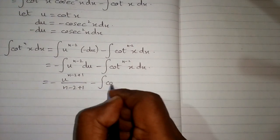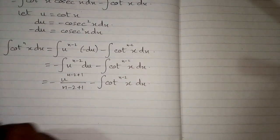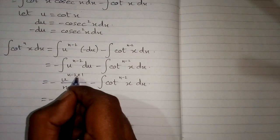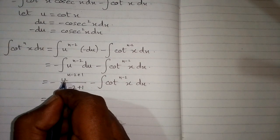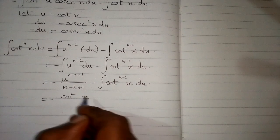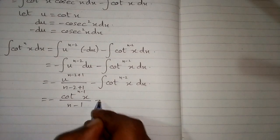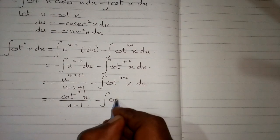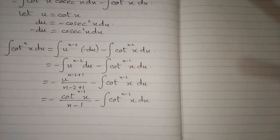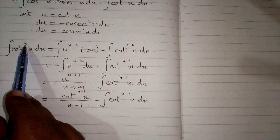This simplifies to minus cot(x) to the power n minus 1, over n minus 1, minus the integral of cot(x) to the power n minus 2 dx. This is the reduction formula for the integral of cot(x) to the power n.